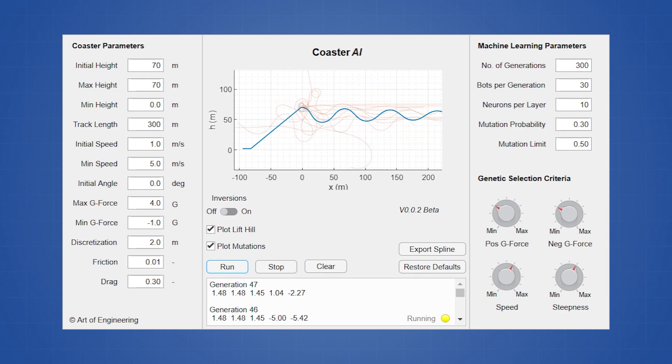Here the blue line represents the spline that currently has the highest score, while the orange lines represent all the splines in the top 10%, along with the respective mutations. This allows us to visually see how the AI is learning, as it tries to find the most optimal spline shape with the given parameters.